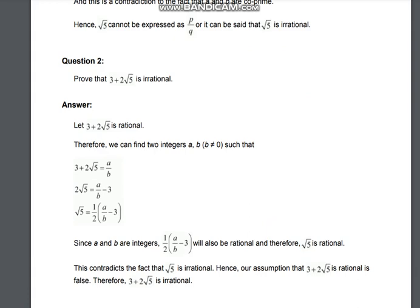Next question: If you have to prove 3 + √5 is irrational, assume it is rational, so we write it as a/b. We take 2√5 = a/b, then rearrange: √5 = (a/b - 3)/2, which equals (1/2)(a/b - 3). Since a and b are integers, this expression is rational. Therefore root 5 should also be rational, but this contradicts the fact that root 5 is an irrational number. Therefore our assumption is wrong, and 3 + √5 is an irrational number.